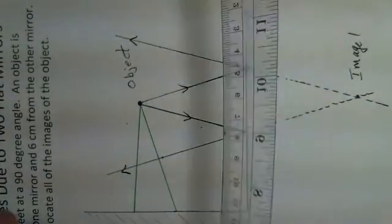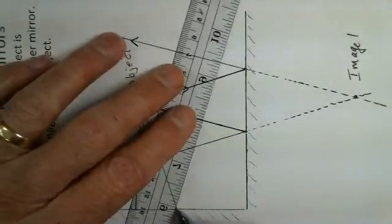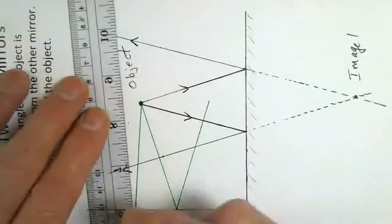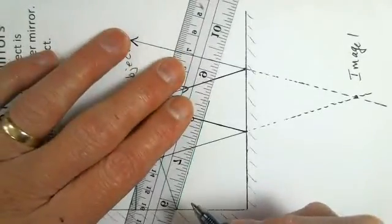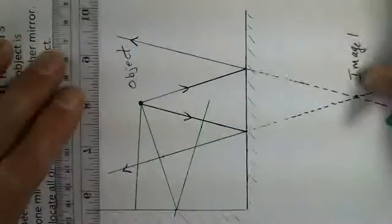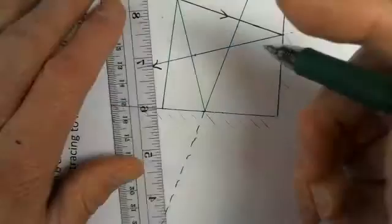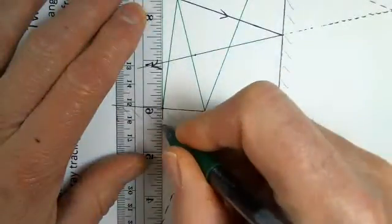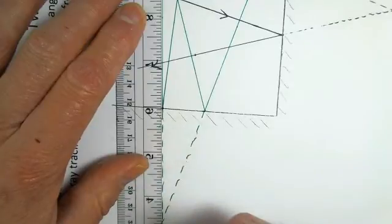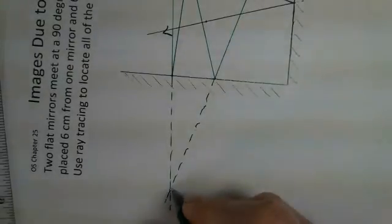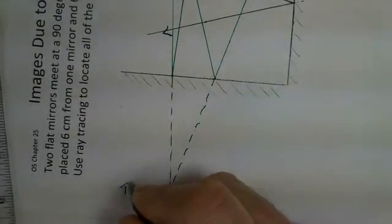Again, I'll bounce the light off of the mirror. I should have done the extension of the ray back behind the mirror. And same way, obey the law of reflection. So I draw the light going out away from the mirror, but then extend back. And again, the light is crossing behind the mirror. The rays extended. So we'll have another image.